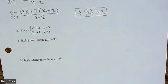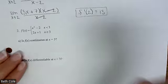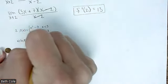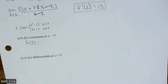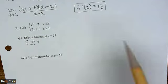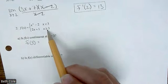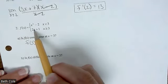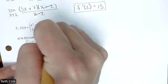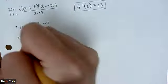A point, a limit, they agree — that's the definition of continuity. Let's first find a point: f of 3. Which piece of the function are we going to plug 3 into? The second one — because it has the equal to. If you plug in 3 there, you get 7.